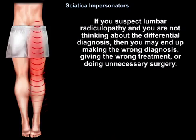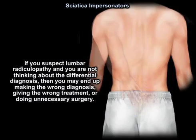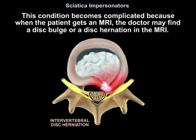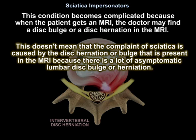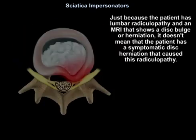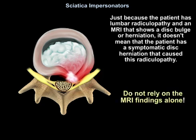If you suspect lumbar radiculopathy and you're not thinking about the differential diagnosis, you may end up making the wrong diagnosis and giving the wrong treatment or doing an unnecessary surgery. This becomes complicated because when the patient gets an MRI, the doctor may find a disc bulge or disc herniation. It doesn't mean the sciatica is caused by that finding, because there are many asymptomatic lumbar disc bulges or herniations. We need to correlate MRI findings with the clinical examination. Do not rely on MRI findings alone.